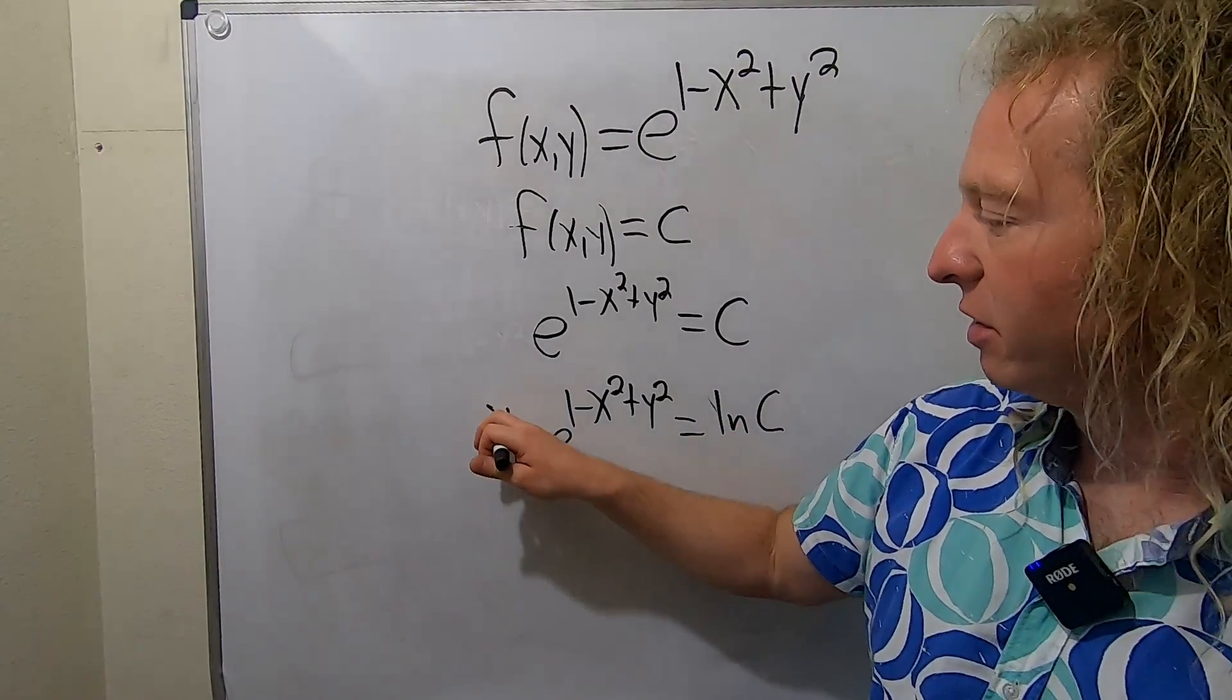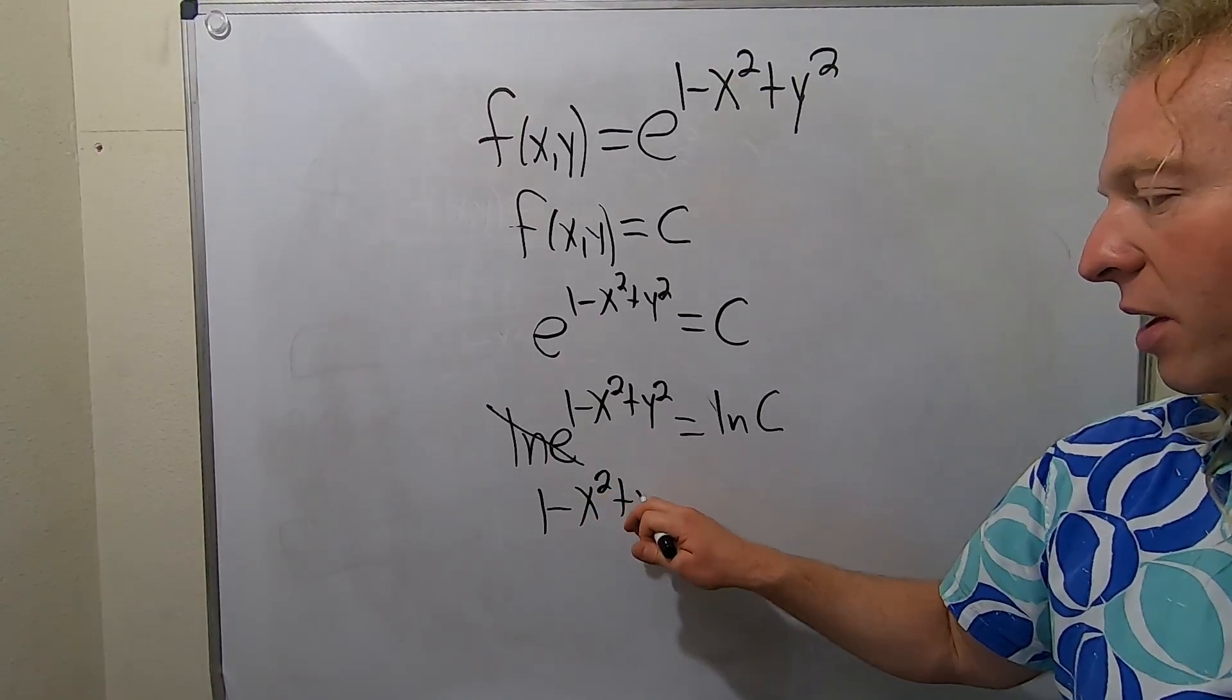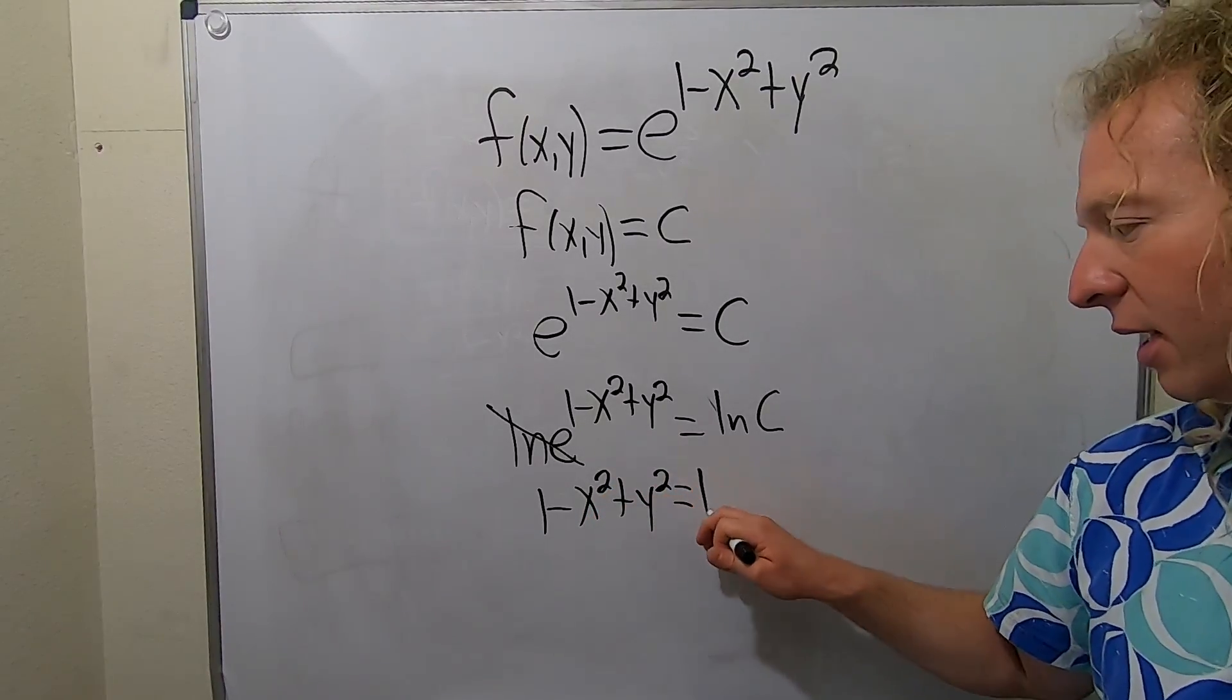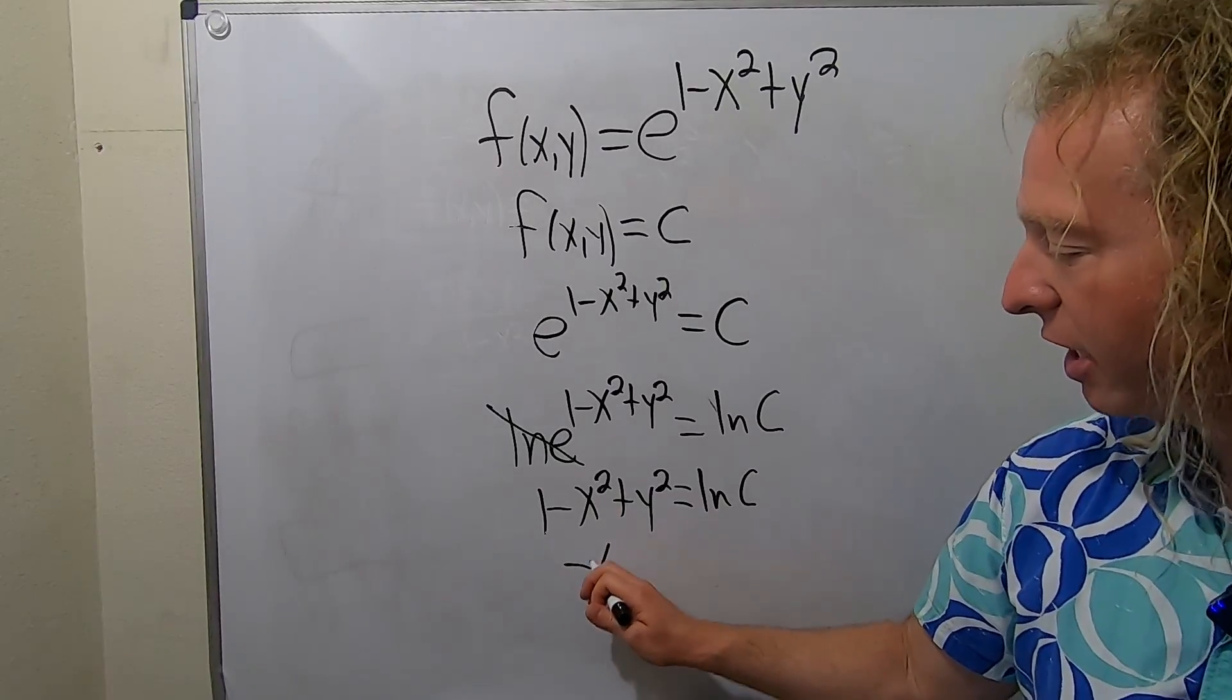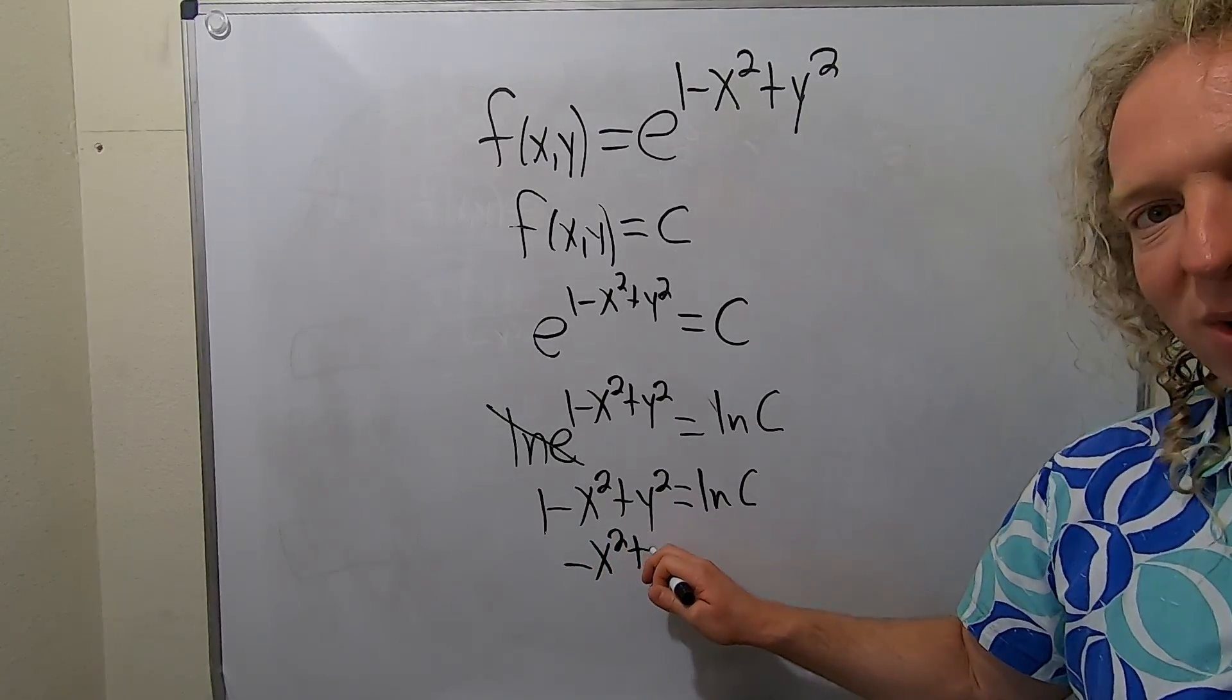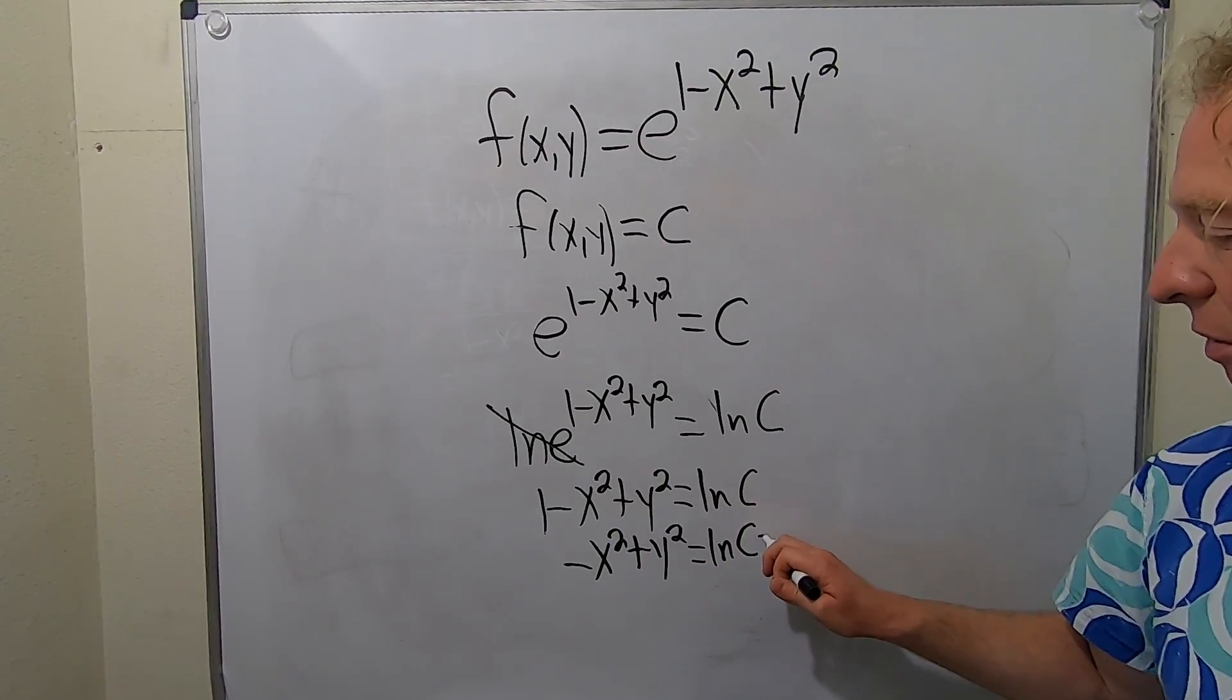So we're here. These cancel. So we have 1 minus x squared plus y squared equals ln c. I guess now we can subtract the 1. So we get negative x squared plus y squared equals ln c minus 1.